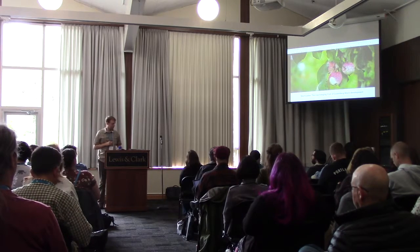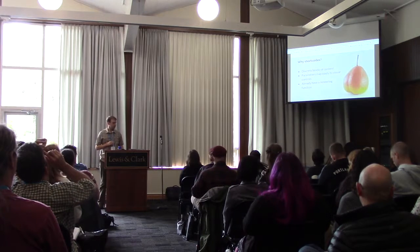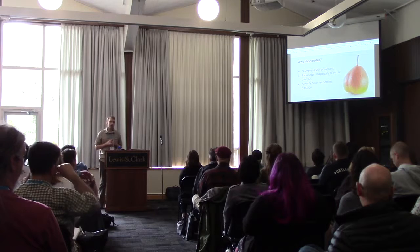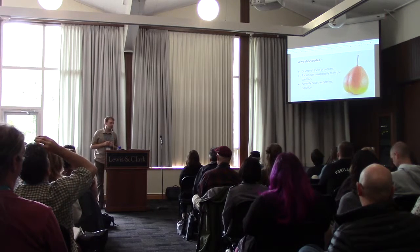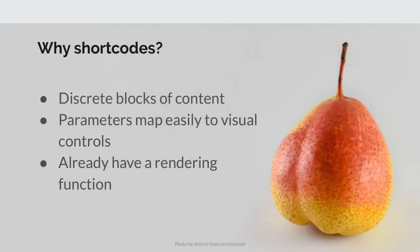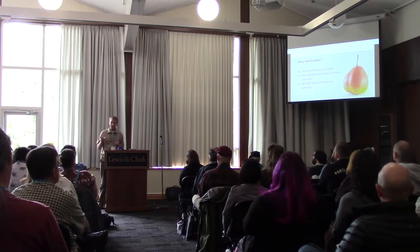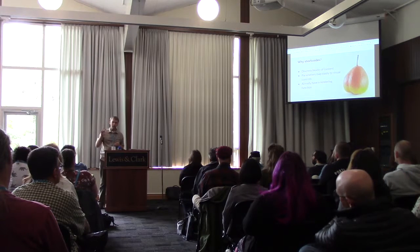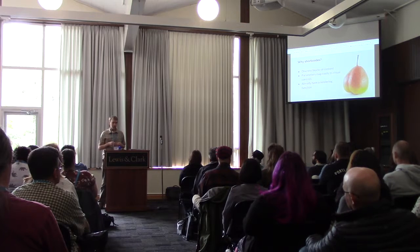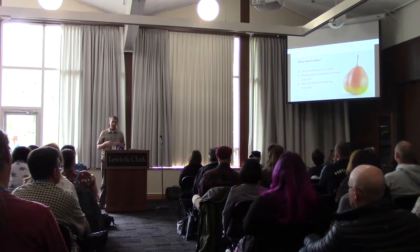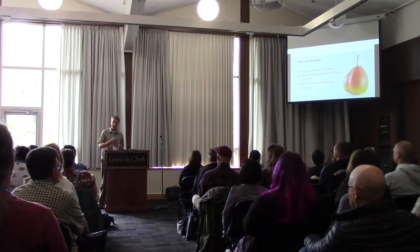Shortcodes are a really good stepping stone for Gutenberg blocks. Like blocks, shortcodes are already discrete chunks of content — often dynamic content. A lot of shortcodes have various parameters you can use to customize their output, which maps very well to the Gutenberg concept of a visual UI with sidebar controls to modify things. And a shortcode is itself a function that renders HTML, which is a key ingredient in a Gutenberg block.